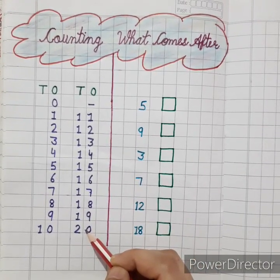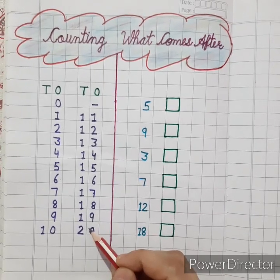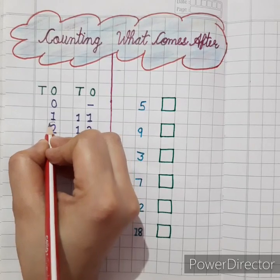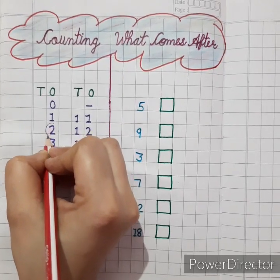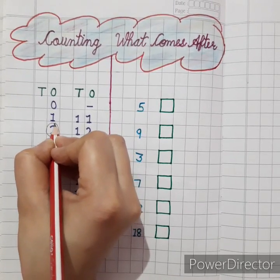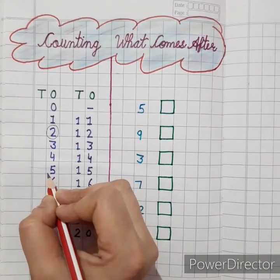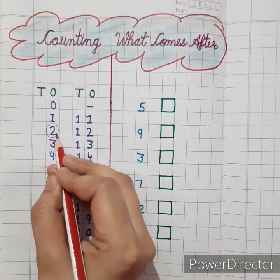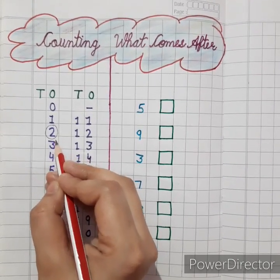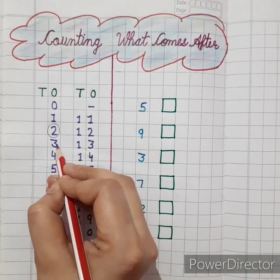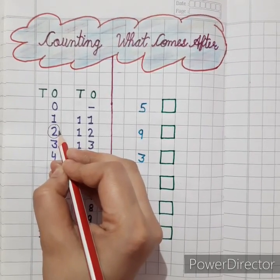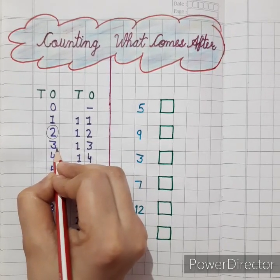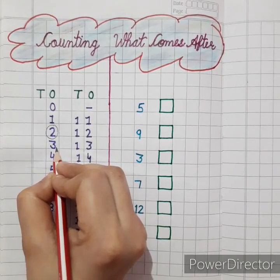Now kids, tell me what will come after number 2. As earlier I told you, after number means the next number. So what is the next number of 2? That is 3.